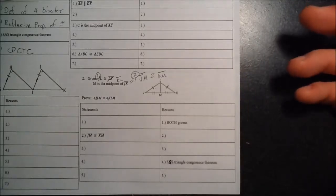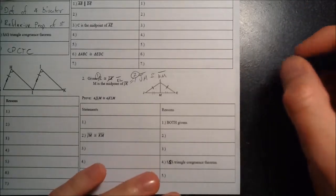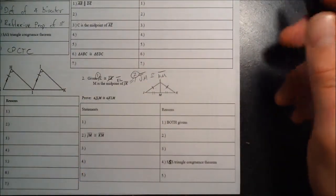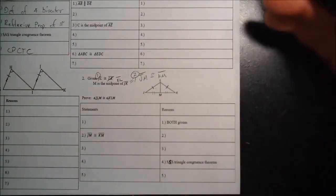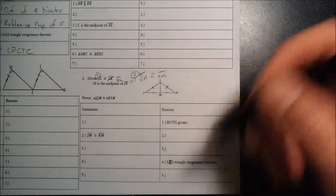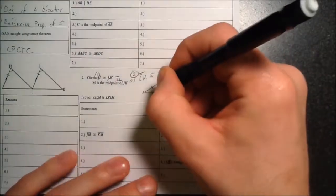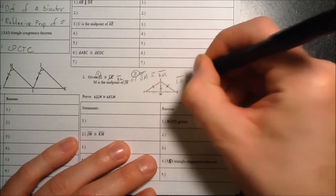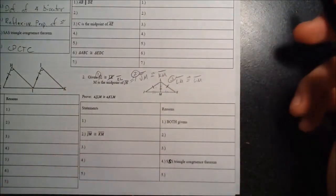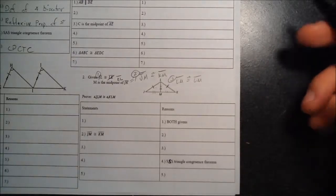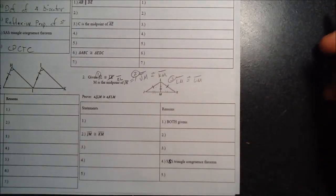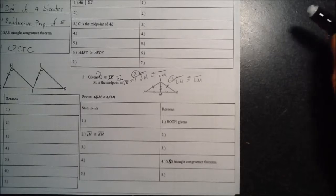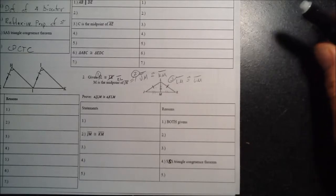We need three pieces of information to prove triangles are congruent. Having used both givens, I now look at the diagram. These two triangles share segment LM, so segment LM is congruent to segment LM — that gives us our third piece. We know those segments are congruent because they are the exact same segment, and in a proof you write the Reflexive Property of Congruence. A helpful memory tip: if you look into a mirror you see a reflection that is the same on both sides.